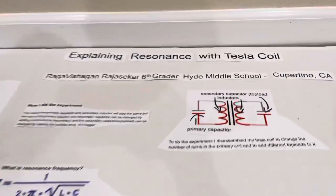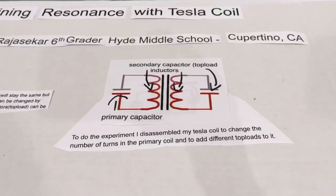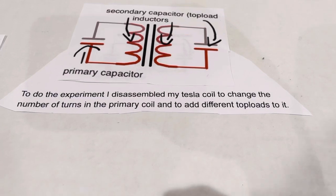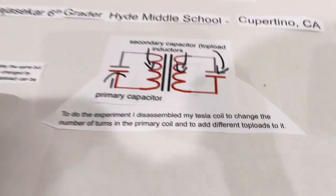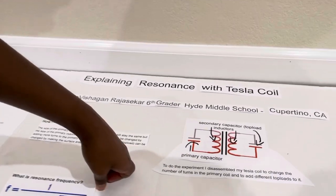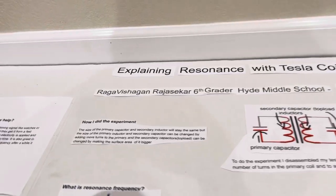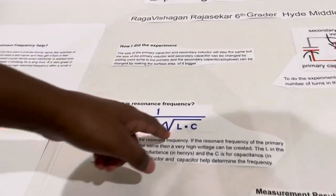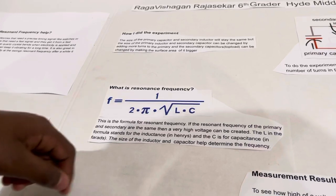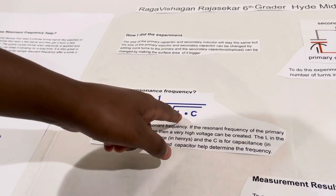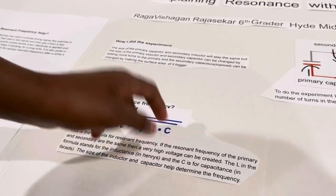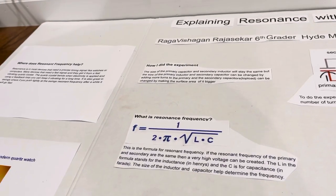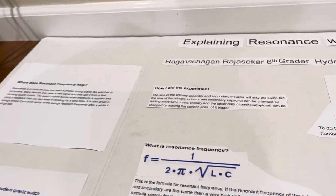To start off, I disassemble my Tesla coil to change the number of turns in the primary coil and to add different top loads to it. The main thing is to change the resonant frequency of my Tesla coil. You can see the formula for resonant frequency right here — inductance (L) times capacitance (C) both have a role in the resonant frequency.